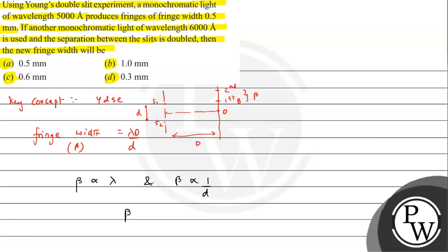We need to find the new fringe width. So beta dash upon beta will be equal to lambda dash upon lambda times d upon d dash, because it is an inverse relation.